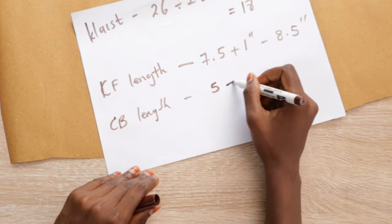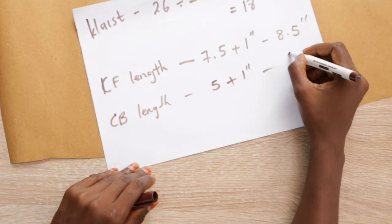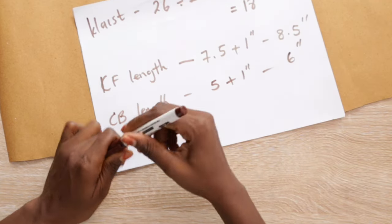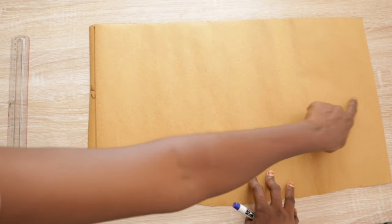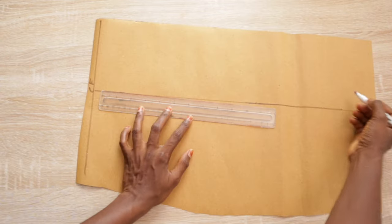And then you're gonna need your center back length, which is the short part, so the length of the back. Mine is 5. I added 1 inch, so making it 6.